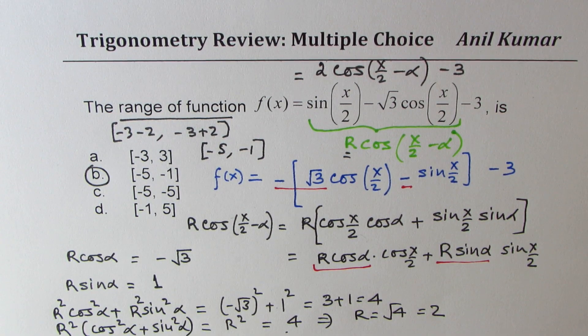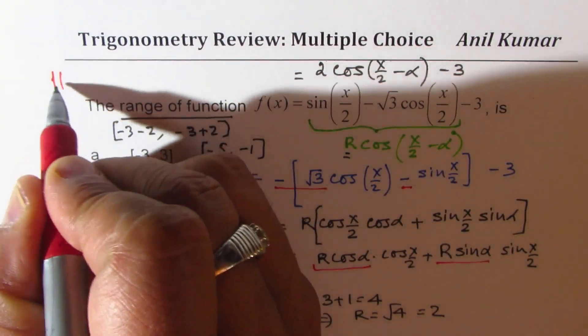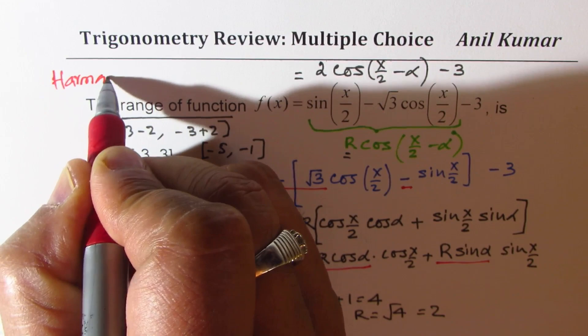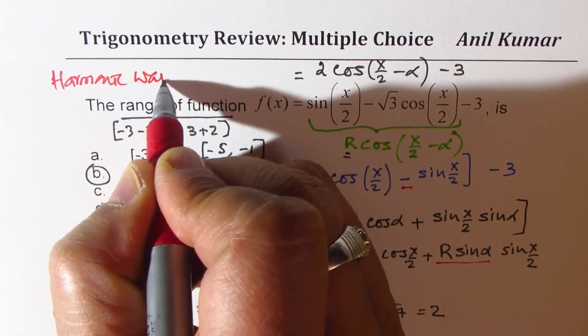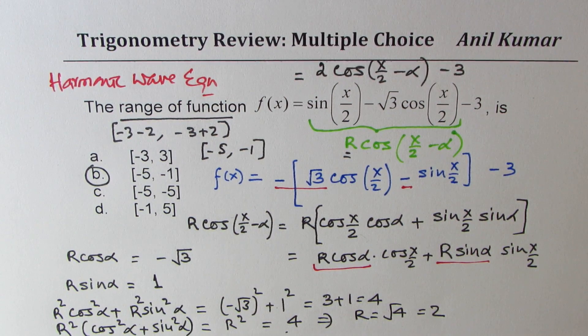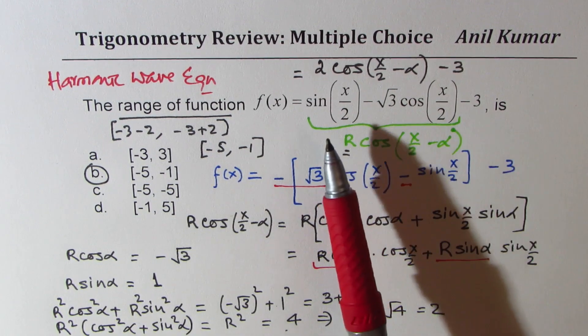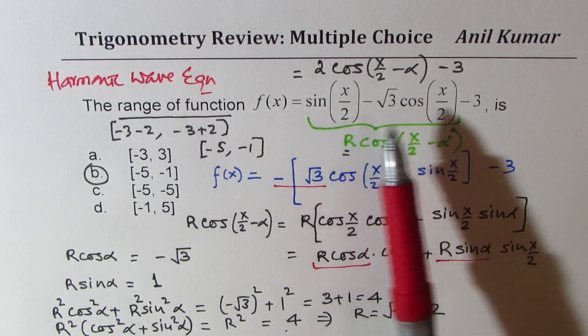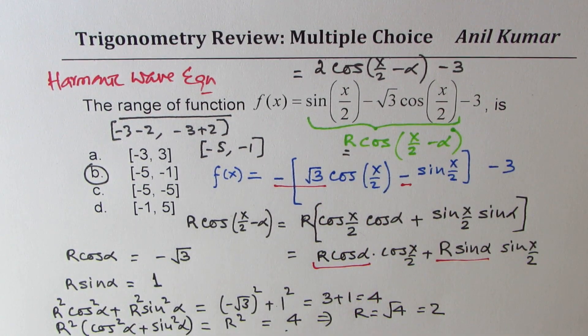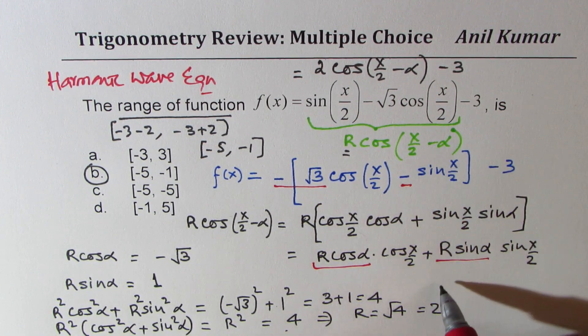Basically we have written the first part of the equation as a wave equation, which is also called harmonic wave equation. That is a very important equation to review for your test. Understand how we find sum or difference of sine and cosine in this form.